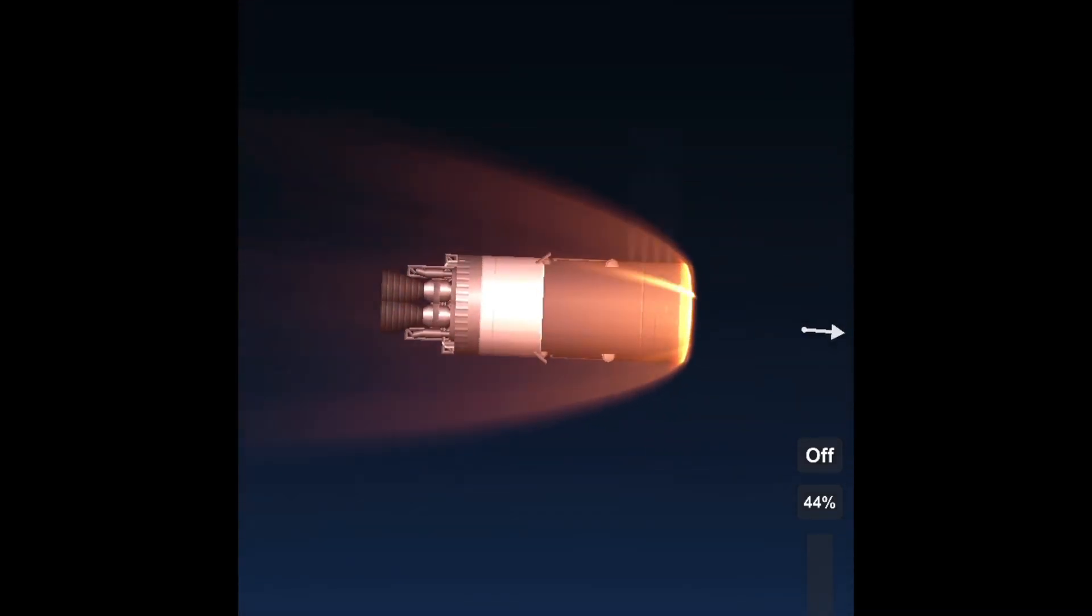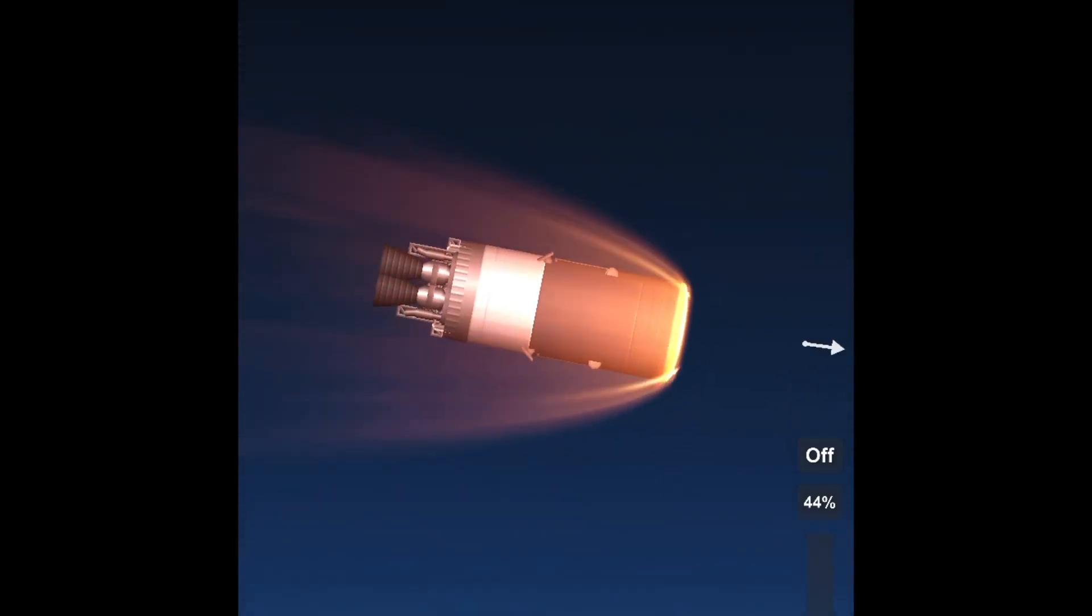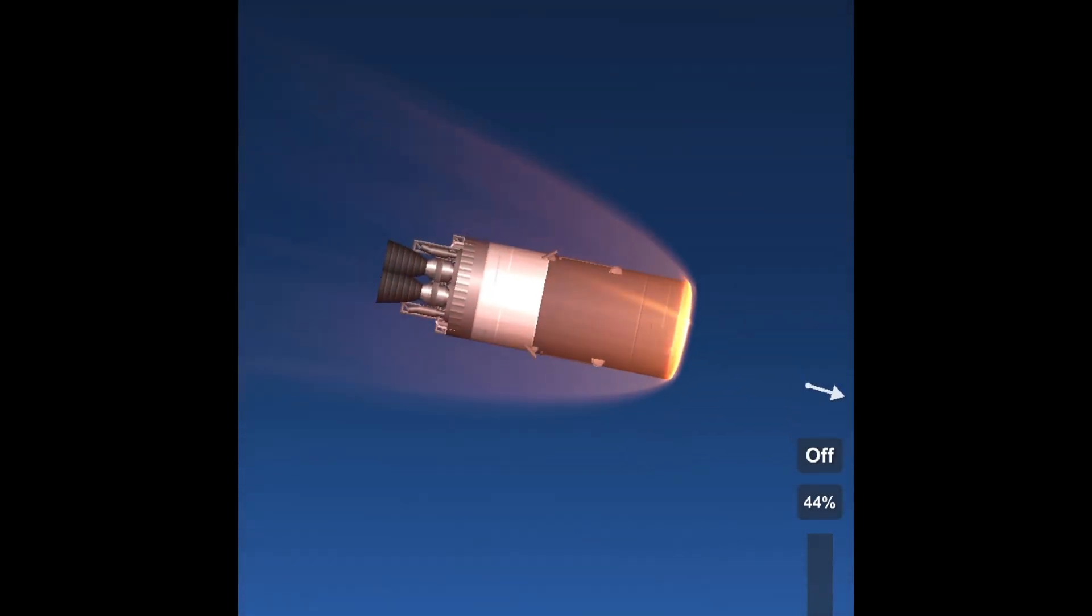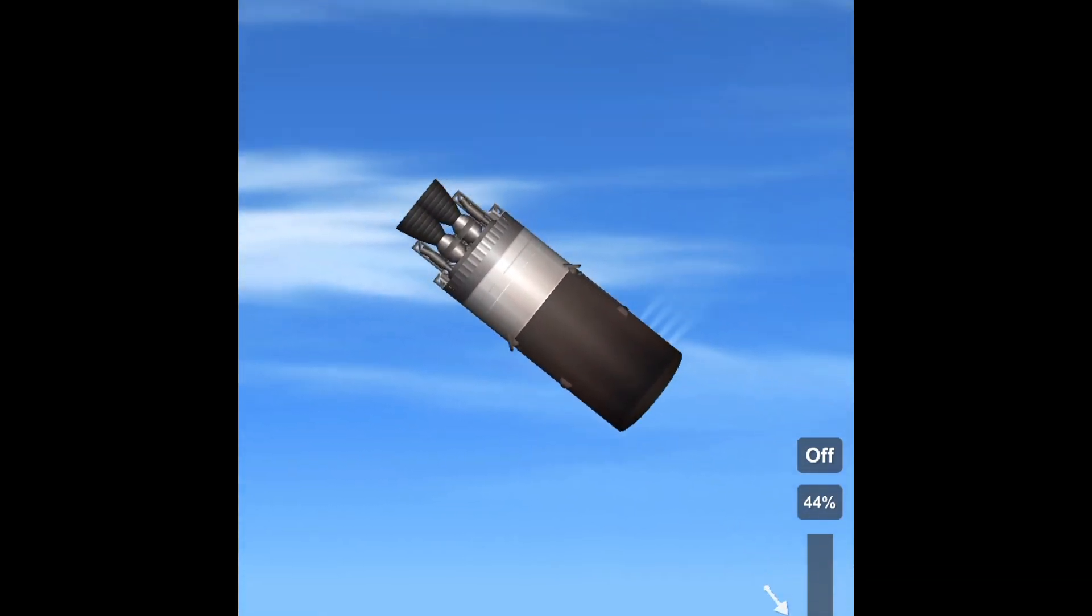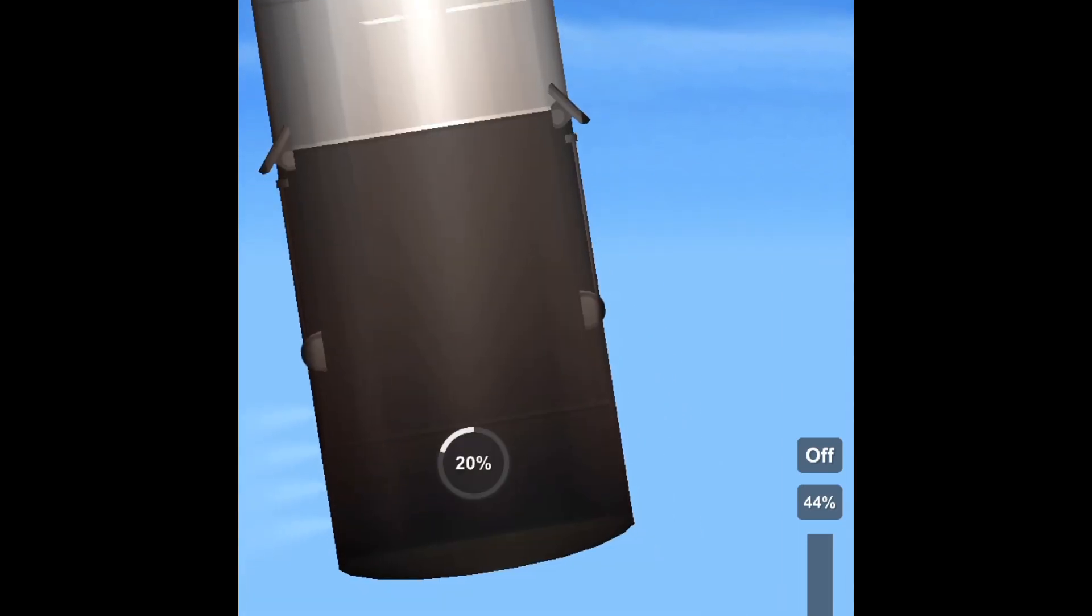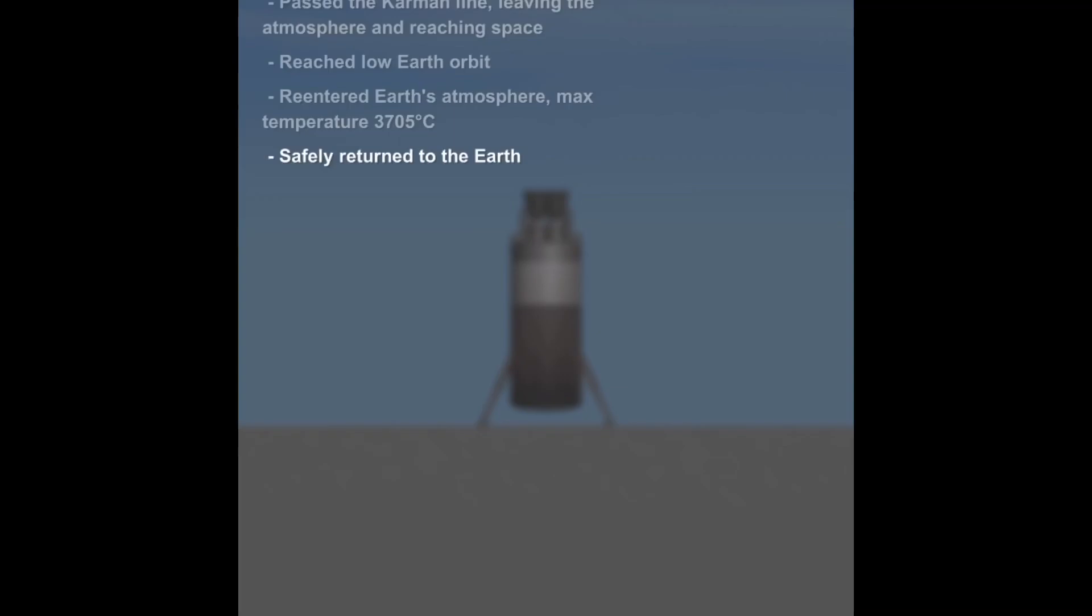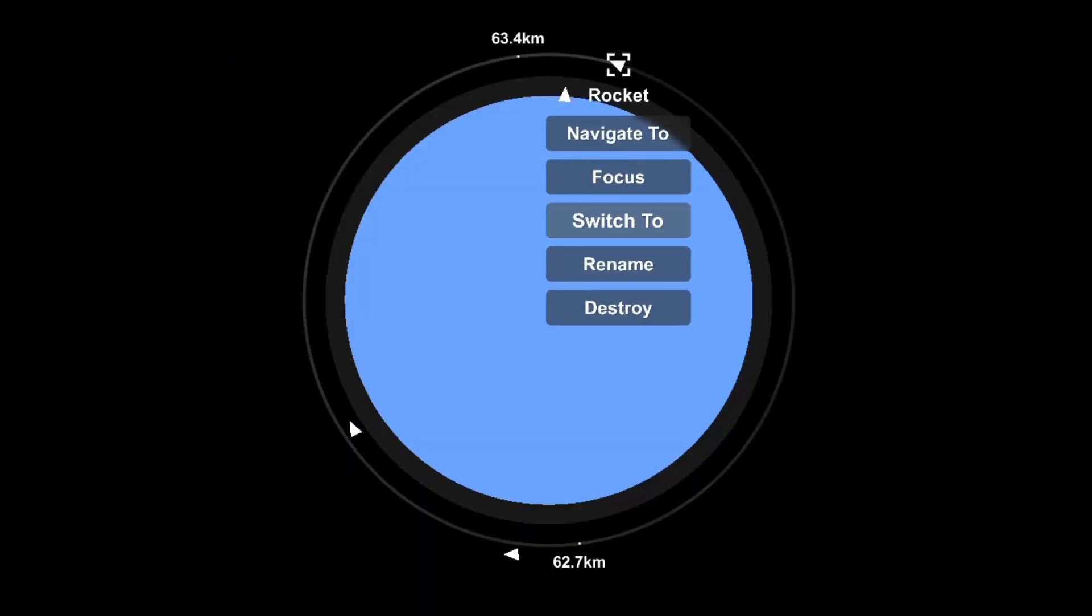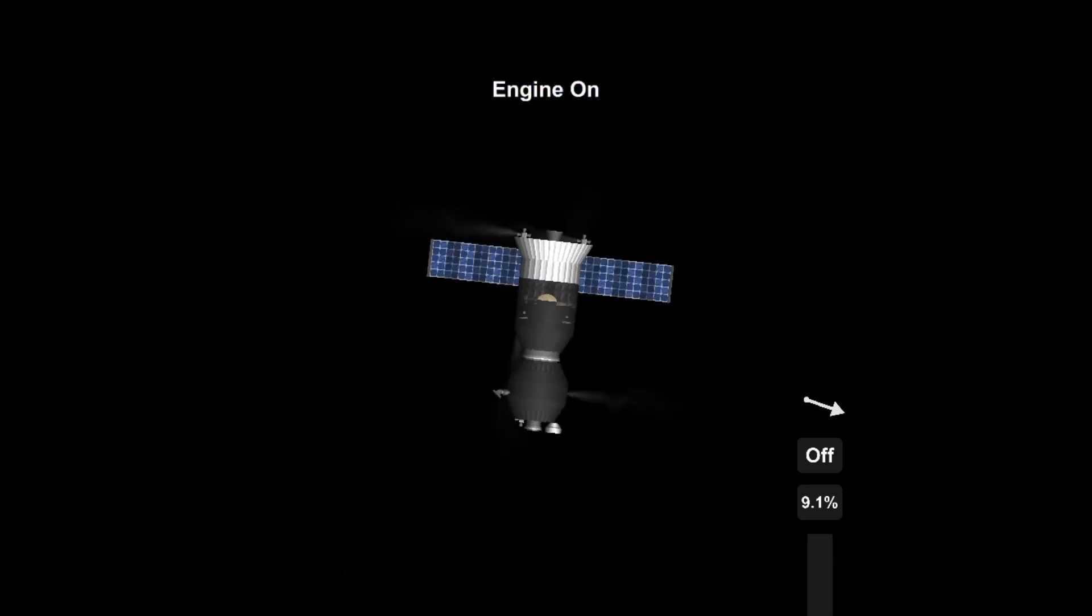We're now entering Earth's atmosphere with the reusable Soyuz third stage and we're about to deploy the parachutes now. I didn't know how far we were from the ground so—actually no, I deployed the landing legs a little too late. And now making orbital adjustments.